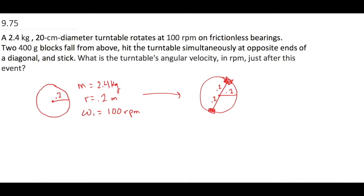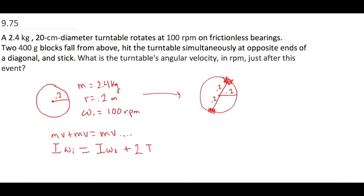Since this is conservation of angular momentum, normally we'd use mv plus mv equals mv for linear momentum. But here we're dealing with angular momentum, so the equivalent of mass is moment of inertia I, and the equivalent of velocity is omega. So we have: I·omega initial for the turntable equals I·omega final for the turntable plus two times I·omega final for the blocks.